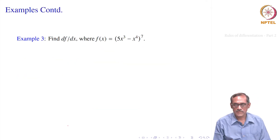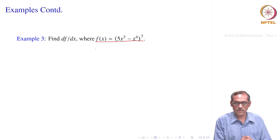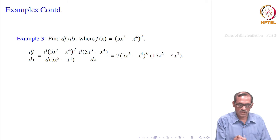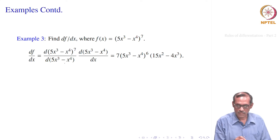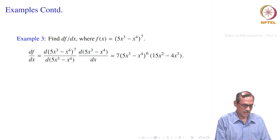Let us take another example. We are required to find the derivative of f, where f(x) is given as (5x³ minus x⁴) to the power 7. Of course you could expand by the binomial theorem, but there is no need — the chain rule will help. We use the chain rule directly: df/dx equals d of (5x³ minus x⁴)⁷ with respect to (5x³ minus x⁴), times d of (5x³ minus x⁴) with respect to x. The first part gives 7y⁶, that is 7(5x³ minus x⁴)⁶, and the next gives 15x² minus 4x³. It is pretty straightforward.